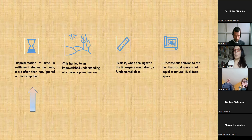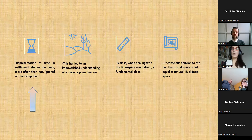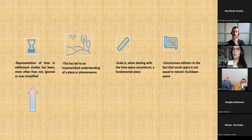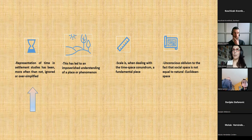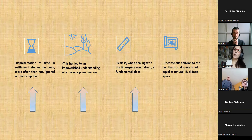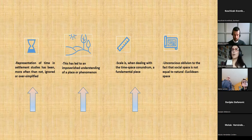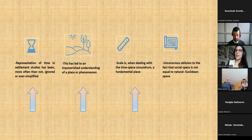So what I want to bring to the table today: first, the representation of time in settlement studies has been more often than not ignored or oversimplified, and this stands in the way of producing a true spatial narrative. Second, this leads to an impoverished understanding of a phenomenon or a place, because we are leaving aside not only time and space but also scale — which when dealing with the time-space conundrum is a fundamental piece.